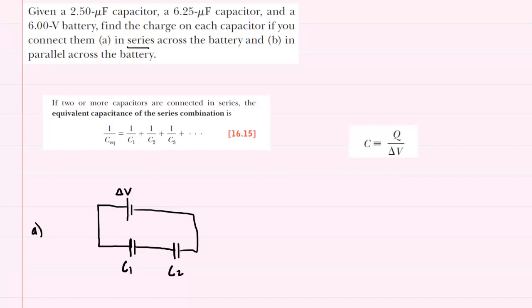We have a potential source or a battery marked delta V, and then we have two capacitors connected in series, and we've marked them C1 and C2. For the purposes of this question, we can call the first capacitor C1, and the second capacitor can be our C2.